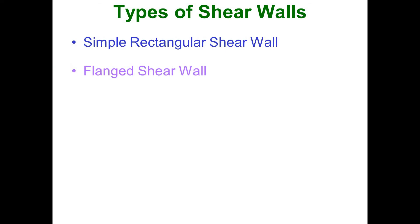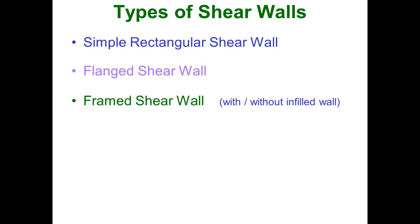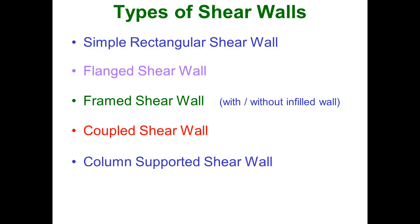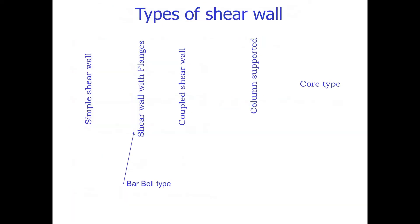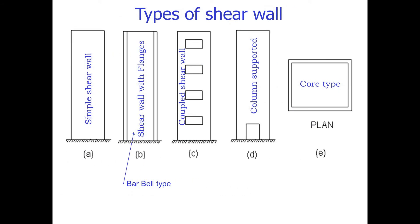Types of shear walls — a very important theory question often asked in examinations. The types include: simple rectangular shear wall, flange type, frame type with and without infill walls, coupled shear wall, column-supported shear wall, and core type shear wall. From the figures: the simple rectangular type, the flange section type, the coupled shear wall with an opening, the column-supported shear wall, and the core shear wall where the outer periphery is provided by the shear wall.